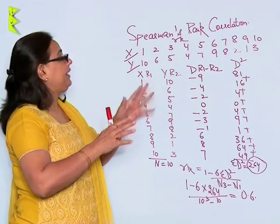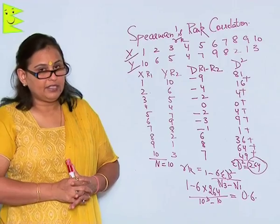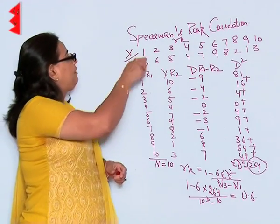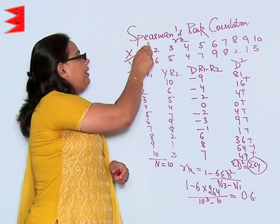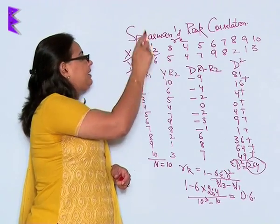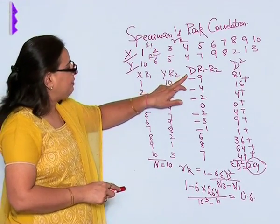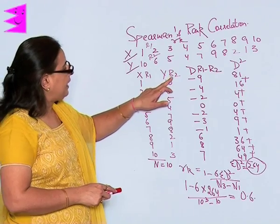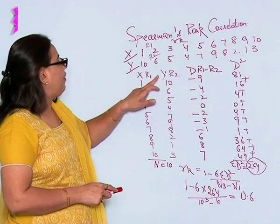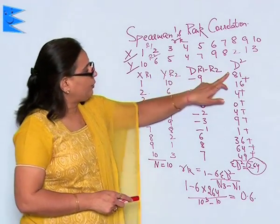Remember, this is a very easy method of the Spearman's Rank Correlation, wherein we have two ranks R1 and R2 as X and Y. I first of all take out the deviation by subtracting the R2 from R1.